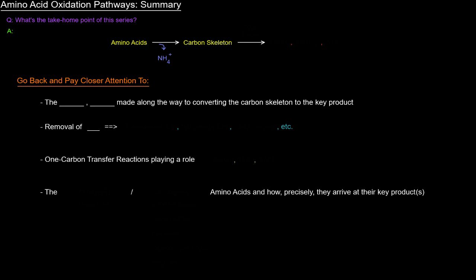Once we remove that nitrogen, we get the carbon skeleton, which can one way or another eventually give us a key product that can go through the TCA cycle, and from there, going through the TCA cycle gives us some NADH, FADH2, and GTP, all of which are valued as energy.